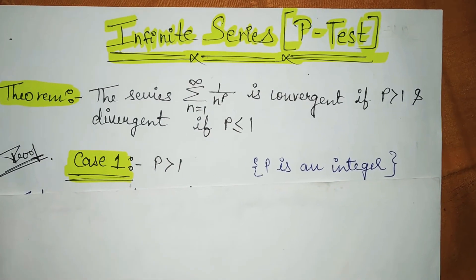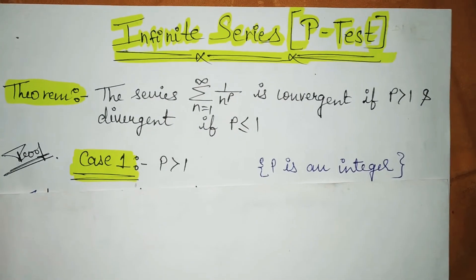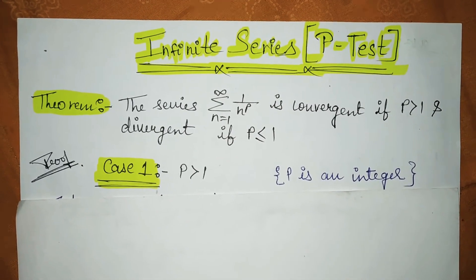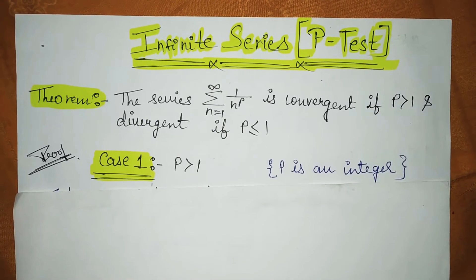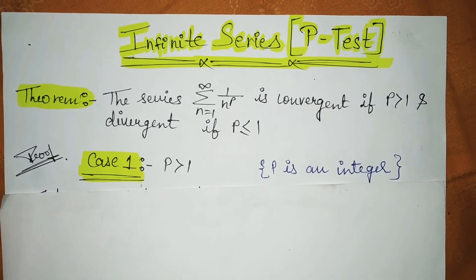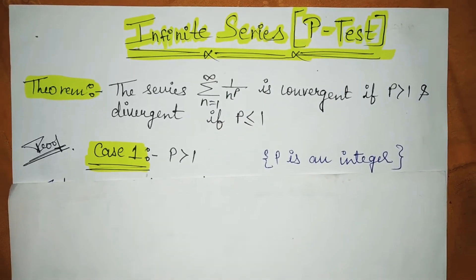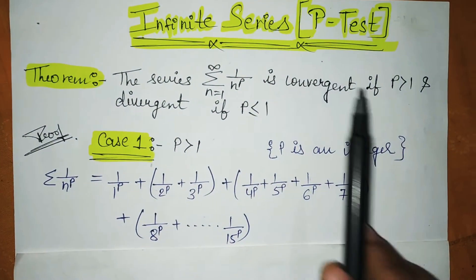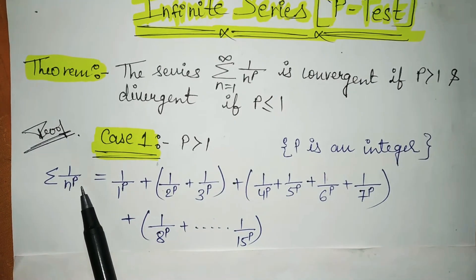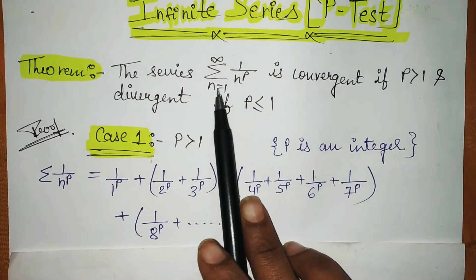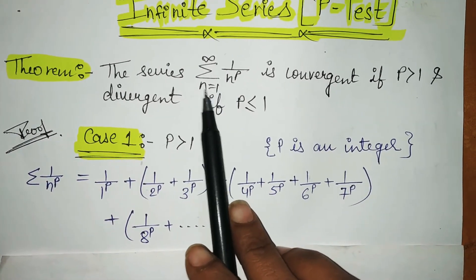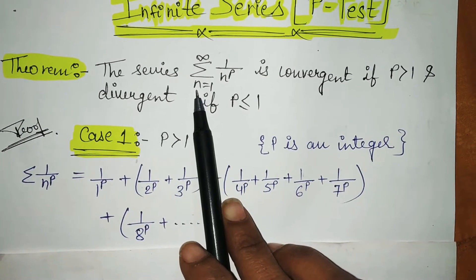Case one: P is greater than 1, where P is an integer. The value of P cannot be a fractional value — decimals are not allowed. P ki value 1/2, 1/3 nahi ho sakti. We will take integer values, that is 1, 2, 3, and so on. We have been given the function value 1 upon n to the power P, where n goes from 1 to infinity.